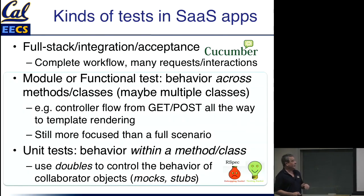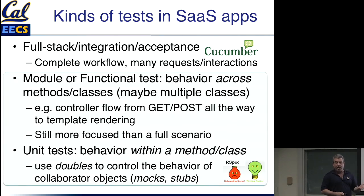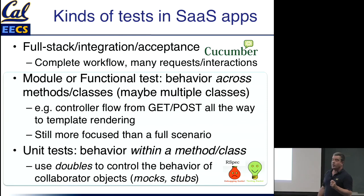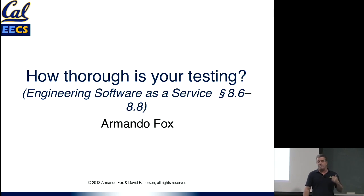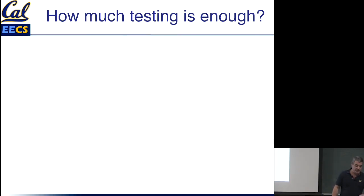So this is where we are. We're going to use a tool called RSpec, which if you've used JUnit or any of the Java testing tools, it comes from that family — but I think it's actually a lot more streamlined and graceful to use. The question is: how much is enough? How thorough is your testing? This turns out to be maybe not as obvious a question to answer as you might think. So how do you know when you're done testing?